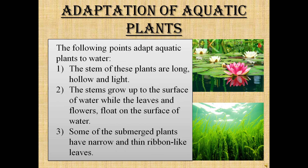Adaptation of aquatic plants. First, the stems of these plants are long, hollow, and light. Second, the stems grow up to the surface of water while the leaves and flowers float on the surface of water. Third, some of the submerged plants have narrow and thin ribbon-like leaves.